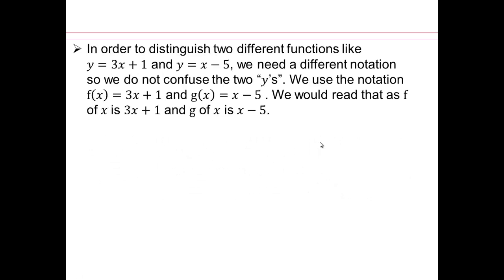In order to distinguish between two different functions, like say y equals 3x plus 1, and y equals x minus 5, we need a different notation so we don't confuse the output from this function with the output from that function. So the notation that mathematicians use is what you see right here. You read this, it's very important that you learn how to read this correctly. It's f of x. f of x equals 3x plus 1. Not f times x, f of x equals 3x plus 1. And g of x is x minus 5.